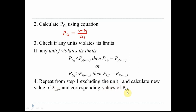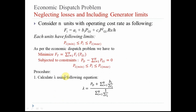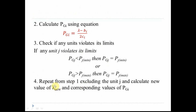The corresponding new values of PGI are then calculated for the remaining units. So starting with 4 units, when one unit is excluded due to limit violation and its value is fixed, the same lambda calculation procedure is repeated for the new reduced set of generating units. This new lambda is called the new lambda value.